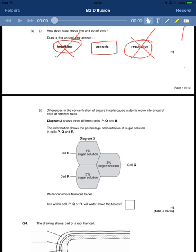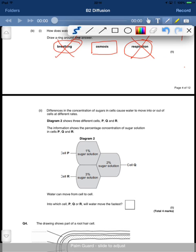This is going to be very similar to the question on diffusion that was talking about percentages of oxygen. Water can move from cell to cell. Into which cell P, Q, or R will water move the fastest?